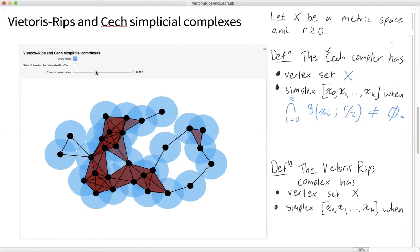I'm now ready to define the Vietoris-Rips complex. The Vietoris-Rips complex has the same vertex set X. And it has a simplex when the pairwise distance between vertex i and j is at most r. And this is for all i and j varying from 0 up to k. So in other words, we have a simplex when all of the edges have length at most r.